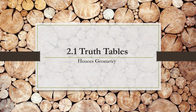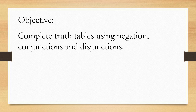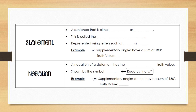Today we're going to talk about truth tables, section 2.1. You should have a copy of some printed notes to go along with this lesson. Our objective is to be able to complete truth tables using negation, conjunction, and disjunctions. First, we need to establish our baseline: a statement is a sentence that either has a value that's true or false — this is called the truth value of your statement.